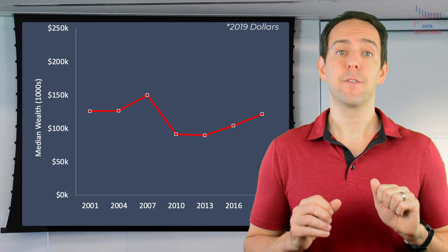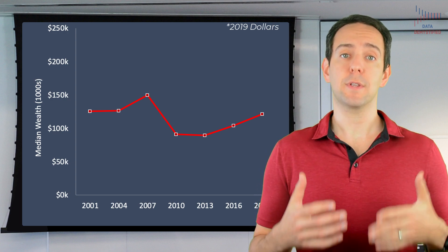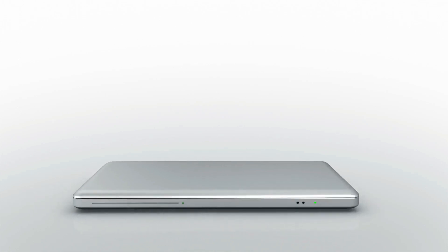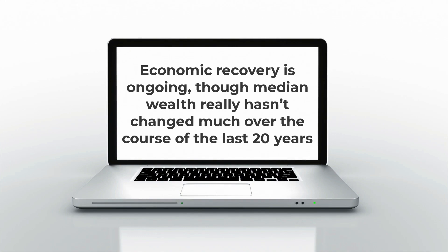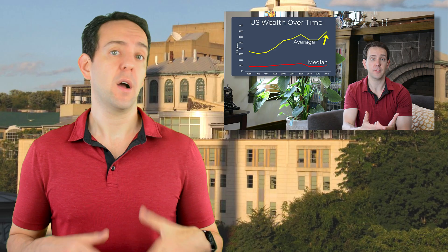To be fair, 2020 has been a disaster for wealth, and this chart might look very different soon enough. But the best and most accurate data we have on wealth in the United States doesn't include the current year, so we'll just have to see how all that plays out. If this were the end of our story, and we only looked at this aggregate measure of median wealth over time, we'd probably conclude something like economic recovery is ongoing, though median wealth really hasn't changed much over the course of the last 20 years. As a quick aside, if you look at average wealth, there is a huge change, and that demonstrates the staggering amount of wealth inequality in our country — but that's the focus of a previous video, so I'll skip that for now.